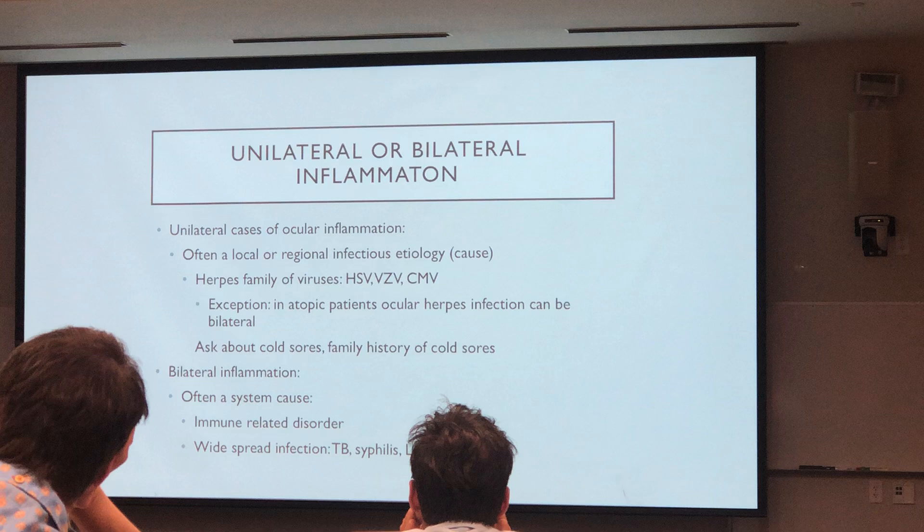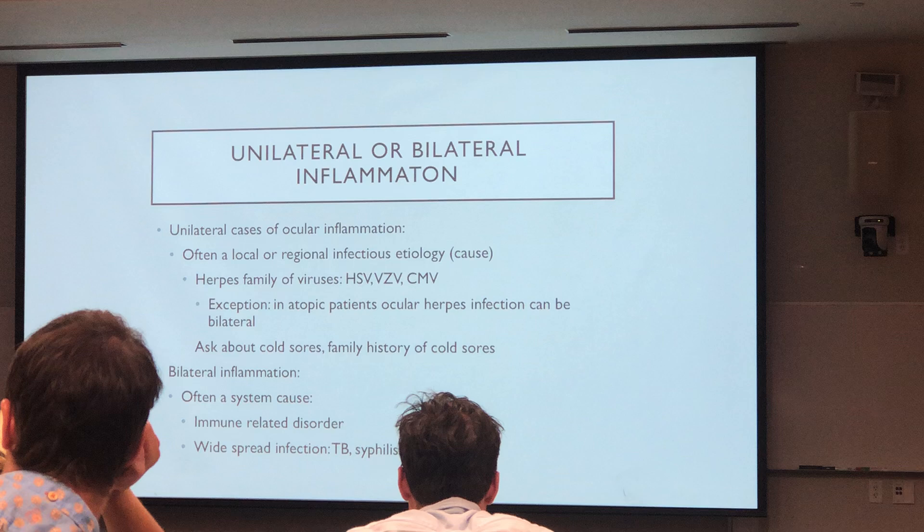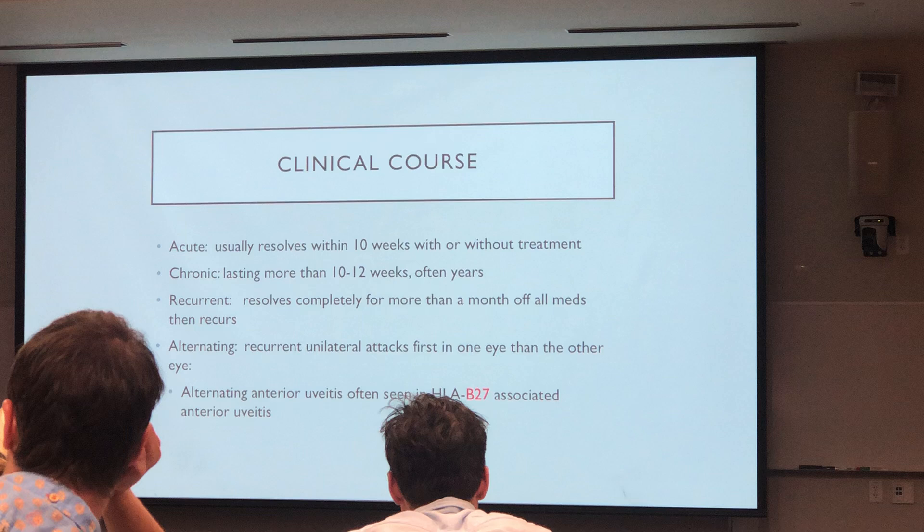When you see a bilateral case of uveitis, it should trigger you to think about a systemic cause — that could be an immune-related disease, or some widespread infection like TB, syphilis, or Lyme disease. The clinical course can be acute, chronic, recurrent, or alternating.